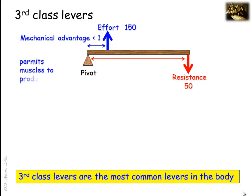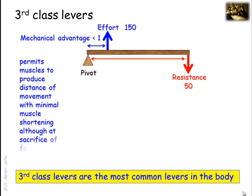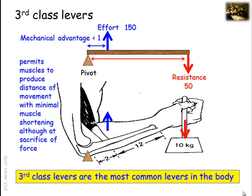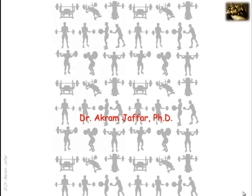This class of levers is one of the most common in the body, since it permits muscles to produce distance of movement with minimal muscle shortening, although at the sacrifice of force. A typical example is the biceps when the forearm is flexed. Third-class levers are the most common levers in the body, supported by the fact that muscle insertions are frequently found close to the joints they move, placing the effort between the pivot and the resistance. Because the levers of the human body are adapted for range, speed, and precision of movement rather than for handling weight, it is not surprising that the incidence of injuries attributed to lifting is high.